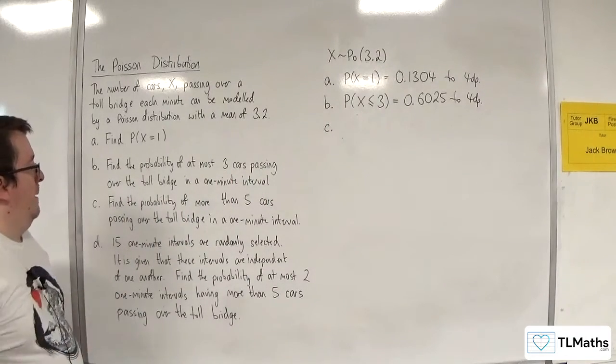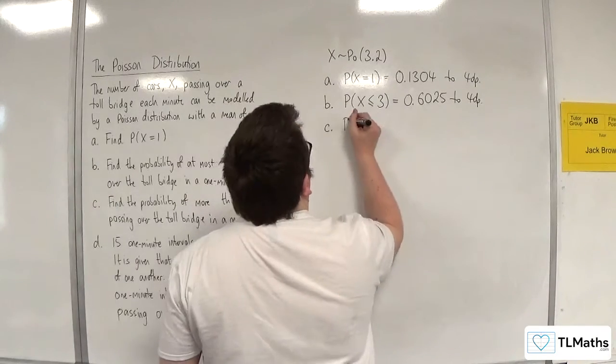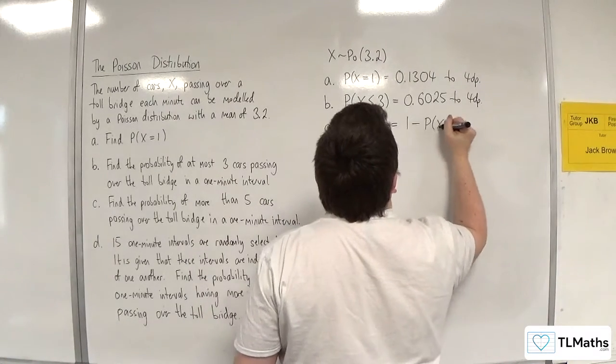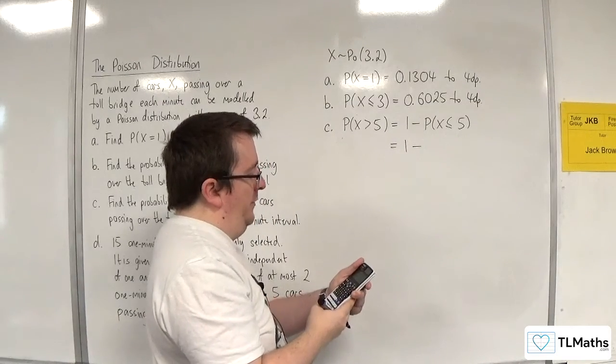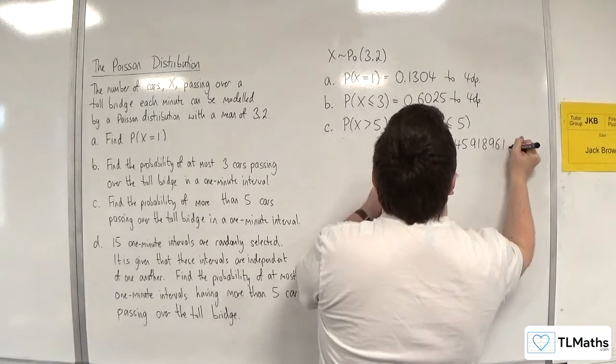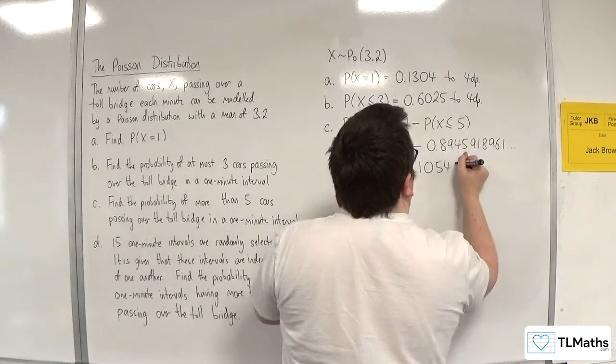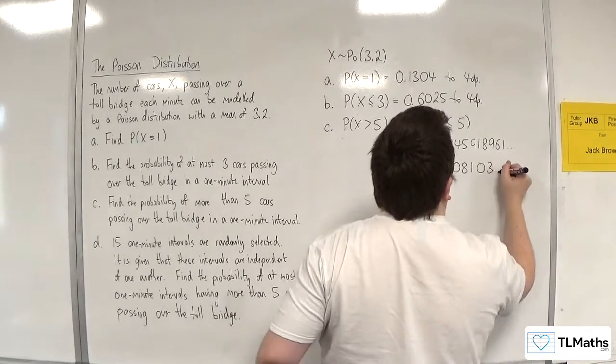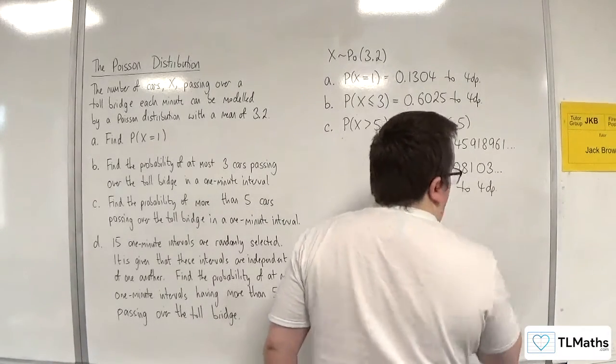Part C: find the probability of more than 5 cars passing over the toll bridge in a 1 minute interval. So more than 5, the probability of x being greater than 5 is going to be 1 take away the probability of x being less than or equal to 5. So I'm going to change over x to 5 on Poisson CD. We should get 0.8945918961, so that would be 0.105408103. So 0.1054 to 4 decimal places.